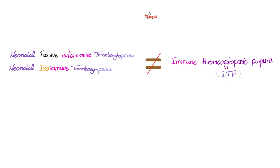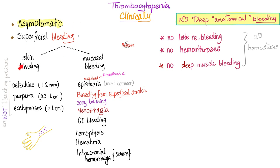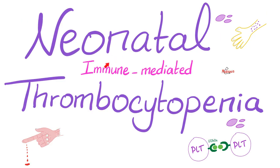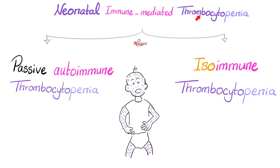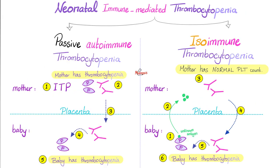That's a big difference. Clinically, the baby will have superficial mucocutaneous bleeding. Now, on to today's topic: neonatal immune-mediated thrombocytopenia has two subtypes — passive autoimmune thrombocytopenia and isoimmune thrombocytopenia. What's the difference?